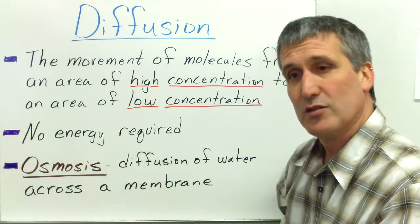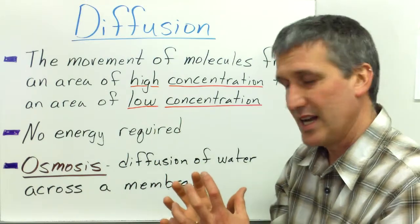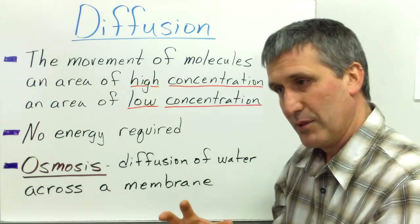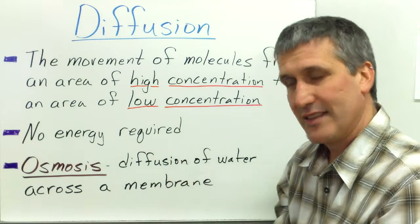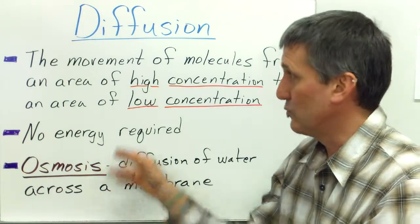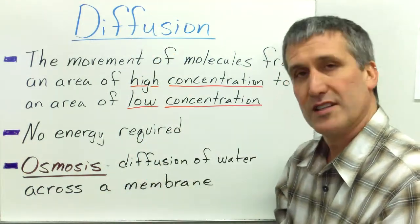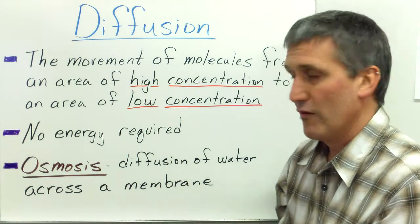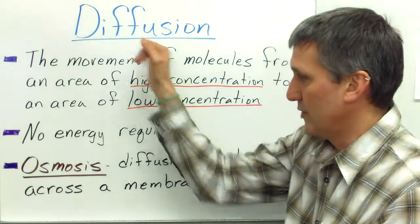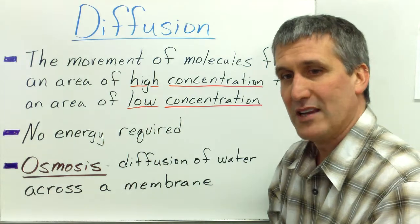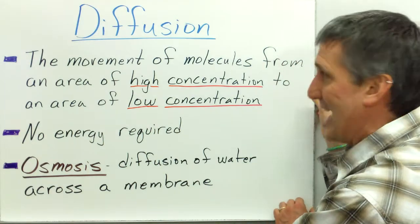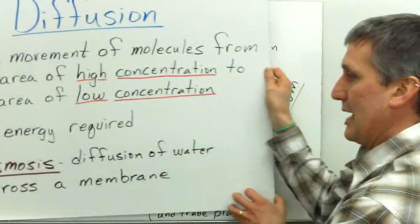And when we're talking about living cells, we're talking about a membrane-bound cell with a watery cytoplasm inside and water outside the cell. So osmosis, which is just a fancy word for the diffusion of water across the membrane, is another form of passive transport. So diffusion and osmosis are the two main terms when we're talking about passive transport in cells.